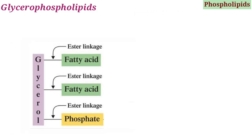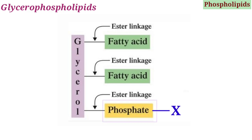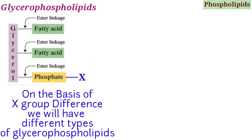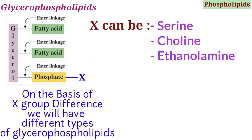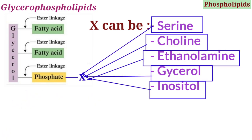Now we have the glycerophospholipid structure. On this phosphate group we can attach another group, indicated here as X. On the basis of differences in this X group, we will have different types of glycerophospholipid. X can be serine, choline, ethanolamine, glycerol, or inositol — and whichever of these attaches to the phosphate group determines the type of glycerophospholipid.